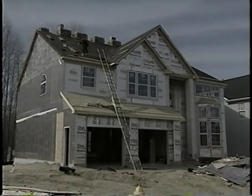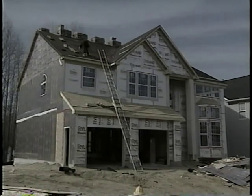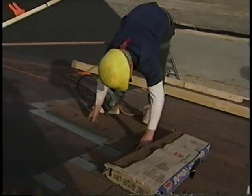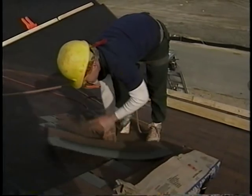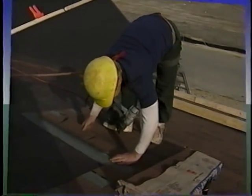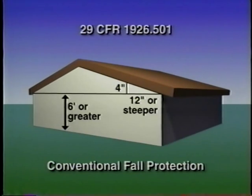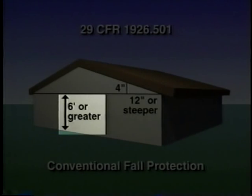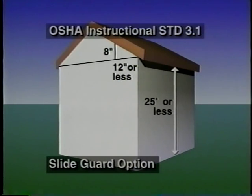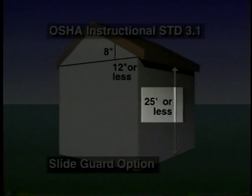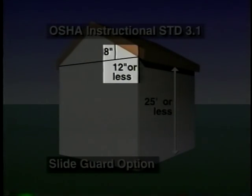The new directive also defines alternatives for compliance with steep roof work. Low slope roofs are not affected. When we refer to roofing work, we are addressing activities involving the installation or removal of the waterproofing layer on a roof deck. In the existing standard, conventional fall protection is required on steep roofs whenever the fall distance is 6 feet or greater and the slope is 4 in 12 or steeper. The interim guidelines offer a slide guard option on steep roofs where the fall distance is 25 feet or less and the slope 8 in 12 or less.